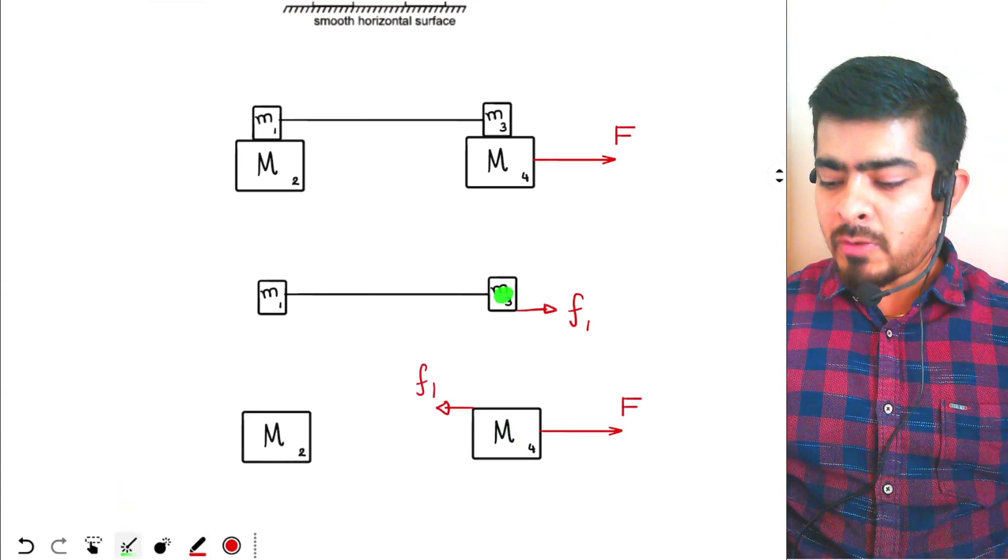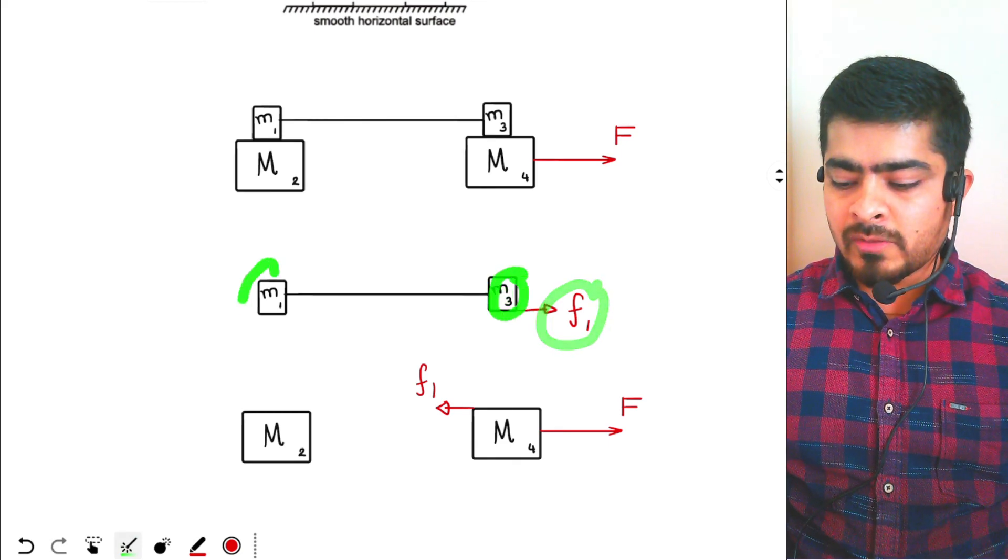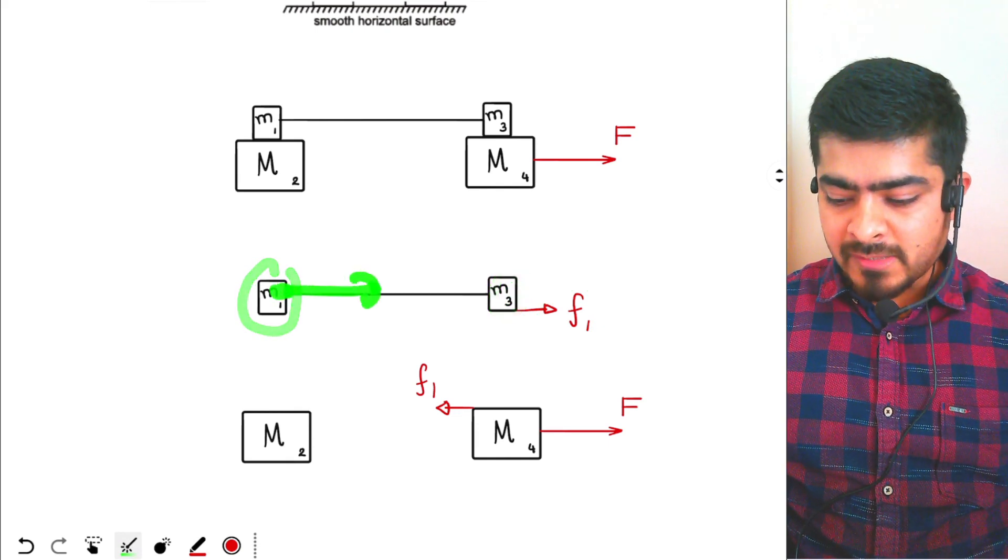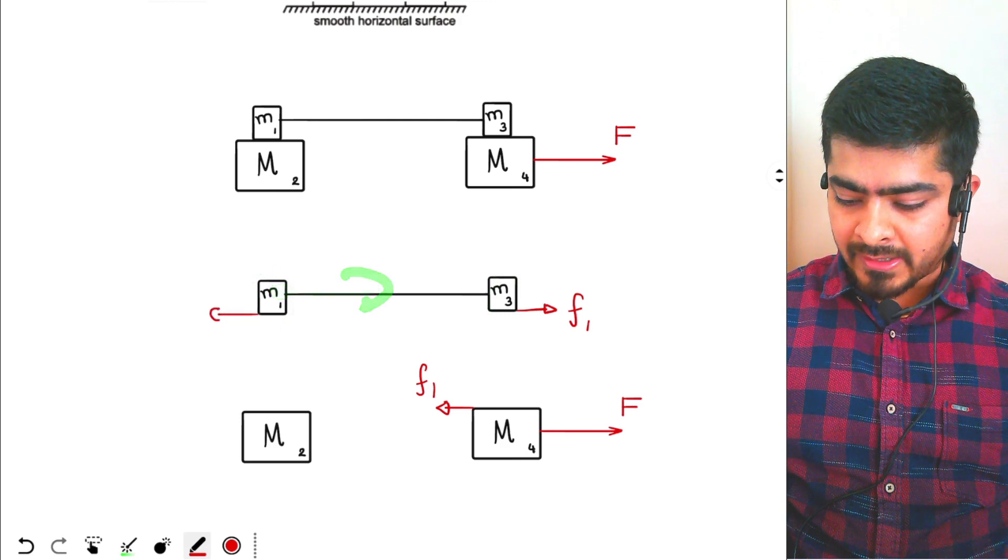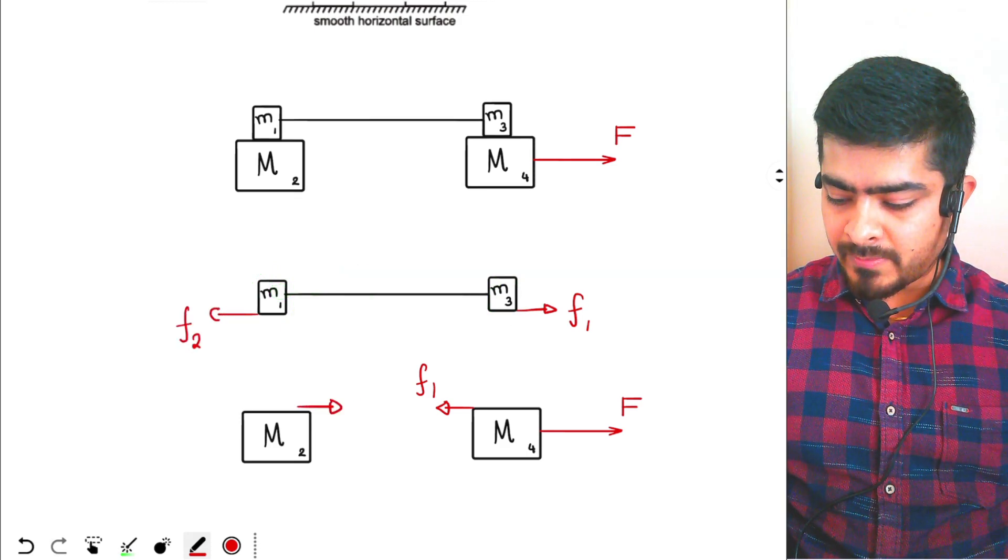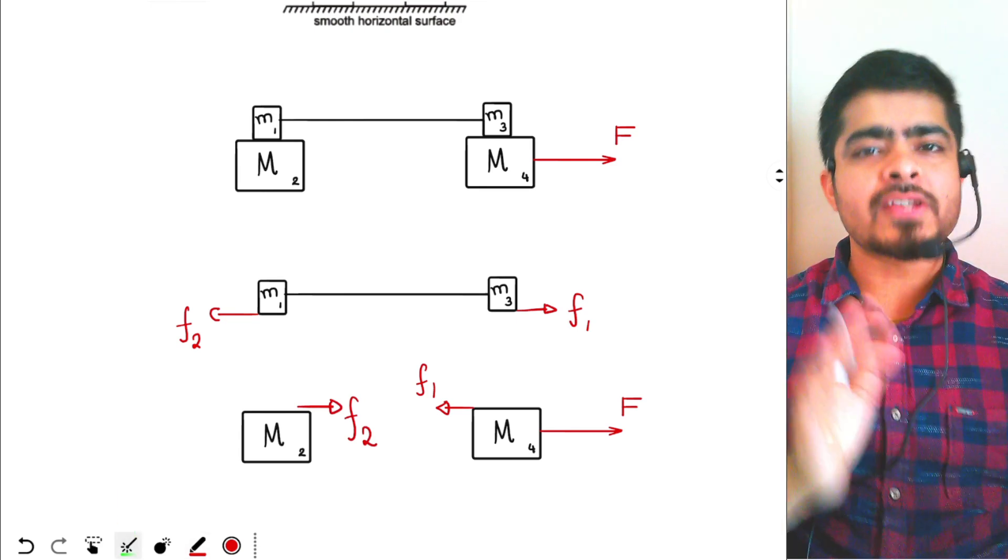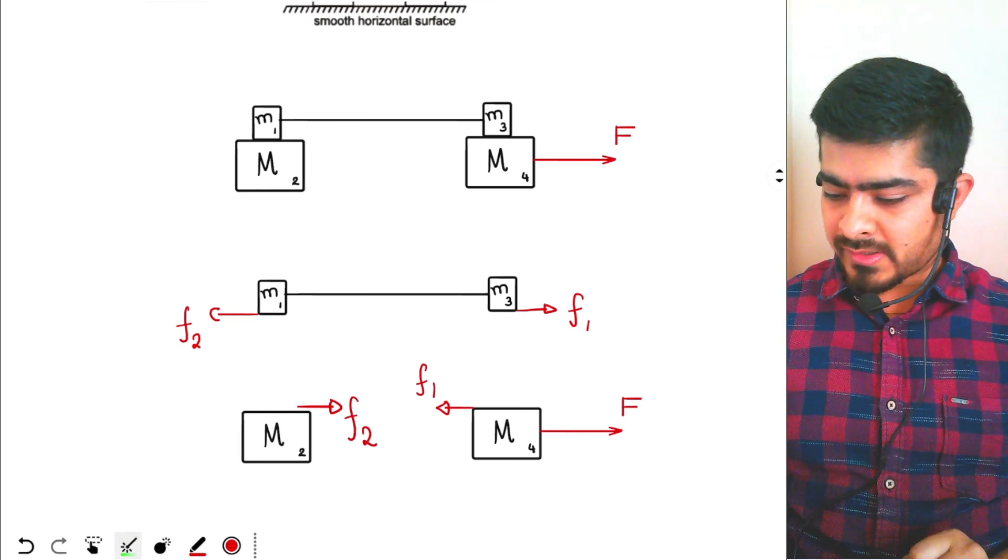Since this block is being pulled by friction F1, this block will also pull block 1 due to the string. Now this block is also getting pulled forward, so friction on this block will be acting backwards and its reaction will be acting over here forward. This is your FBD for the horizontal forces. I am not drawing any of the vertical forces.